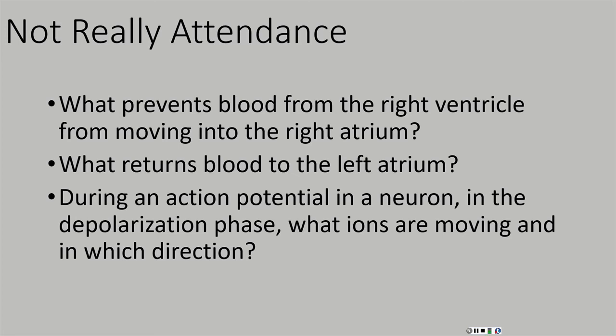What prevents blood from moving from the right ventricle into the right atrium? Blood shouldn't go that way — blood goes from the right atrium into the ventricle and then from the right ventricle into the pulmonary trunk. It should not ever go back the other direction. On the right side of the heart, in between the atrium and the ventricle, there is the right AV valve, which we call the tricuspid valve, and that is what allows blood to move from the atrium into the ventricle but prevents blood from moving back the other direction.